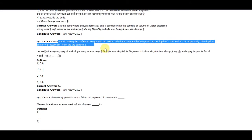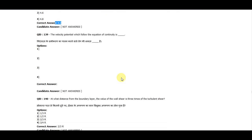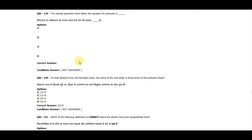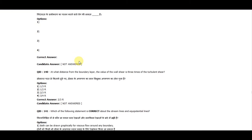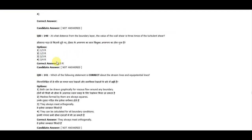Question 138: A longitudinal rectangular surface is submerged in water such that the top and bottom points are at depths of 1.5 meters and 6.0 meters respectively. The depth of the center of pressure is 4.2. Question 140: At what distance from the boundary layer is the wall shear 3 times the turbulent shear? The correct answer is 2.3r.